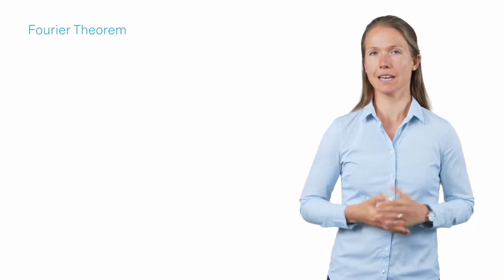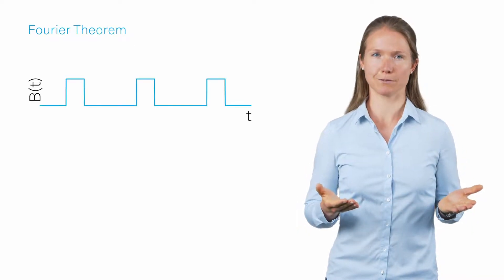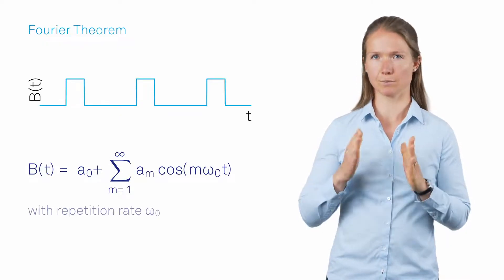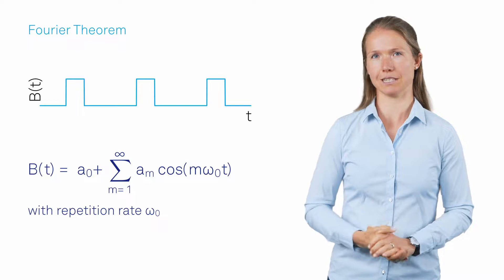So far, we have seen that boxcar averaging can be easily understood in the time domain. In the frequency domain, the boxcar function can be described by a sum of cosine terms, corresponding to the harmonics of the repetition rate.